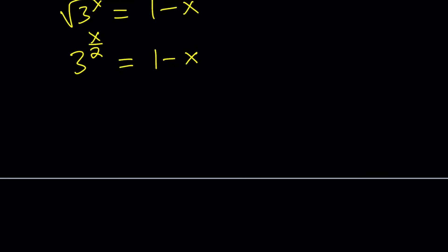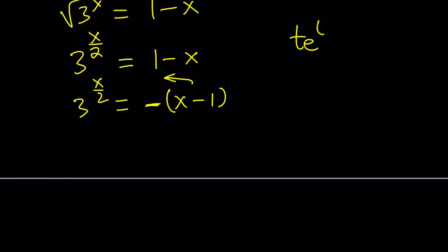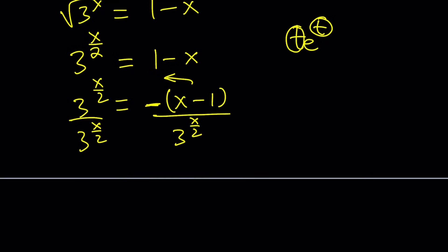From this point on we're going to do a bunch of manipulations to turn it into the form t·e^t. First I'll negate both sides — multiply both sides by negative one. We want to bring three to the power x over two to the other side, but we can't move (x−1) as it would become 1/(x−1), which won't match the exponent. So we divide both sides by three to the power x over two instead.